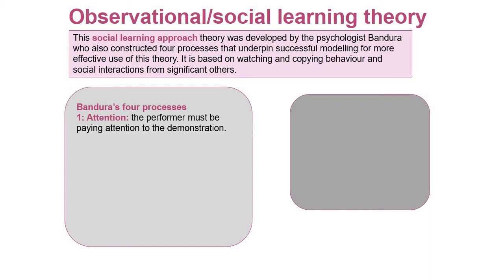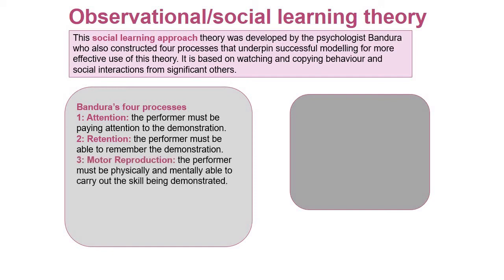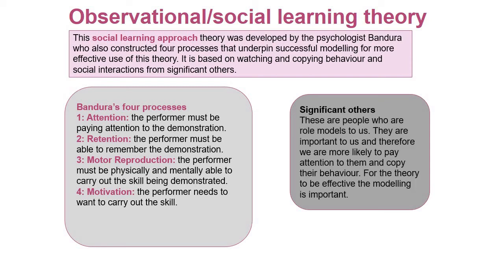The four processes which mean that observational or social learning is going to take place: first, attention - the performer must be paying attention to the demonstration; second, retention - the performer must be able to remember the demonstration; third, motor reproduction - the performer must be physically and mentally able to carry out the skill being demonstrated, so if someone demonstrates something you physically can't do, that's not going to lead to social learning; and finally motivation - the performer needs to want to carry out the skill, needs to be motivated.